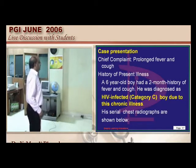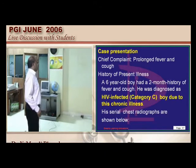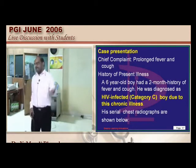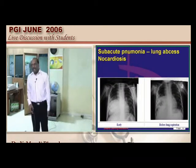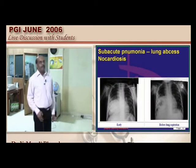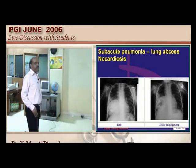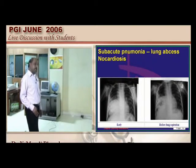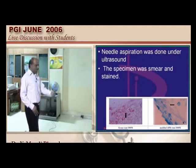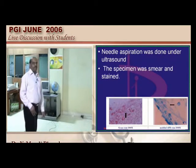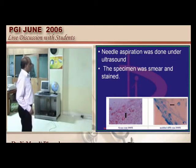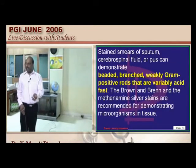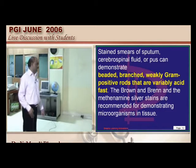Case: HIV-infected patient with prolonged fever, cough, and chronic illness. On radiograph, lung abscess and subacute pneumonia consolidation are seen — think nocardiosis. Nocardia presents as beaded, branched, weakly gram-positive rods that are also acid-fast. Like TB and Mycobacterium, Nocardia is an acid-fast species.